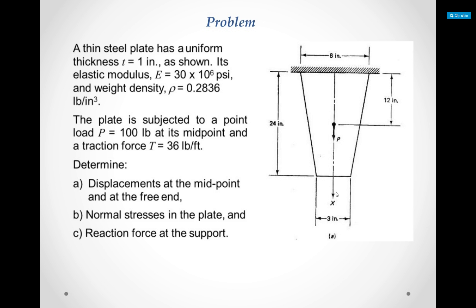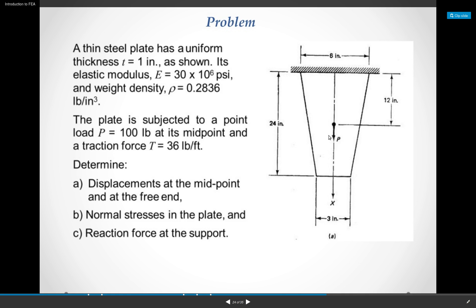Here is a typical problem. It's a thin steel plate with a uniform thickness of one inch. Its elastic modulus equals 30 times 10^6 pounds per square inch, and weight density is 0.2836 pounds per inch cubed. The plate is subjected to a point load of 100 pounds at its midpoint and a traction force of 36 pounds per foot. Determine the displacements at the midpoint and at the free end, the normal stresses in the plate, and the reaction force of the support.